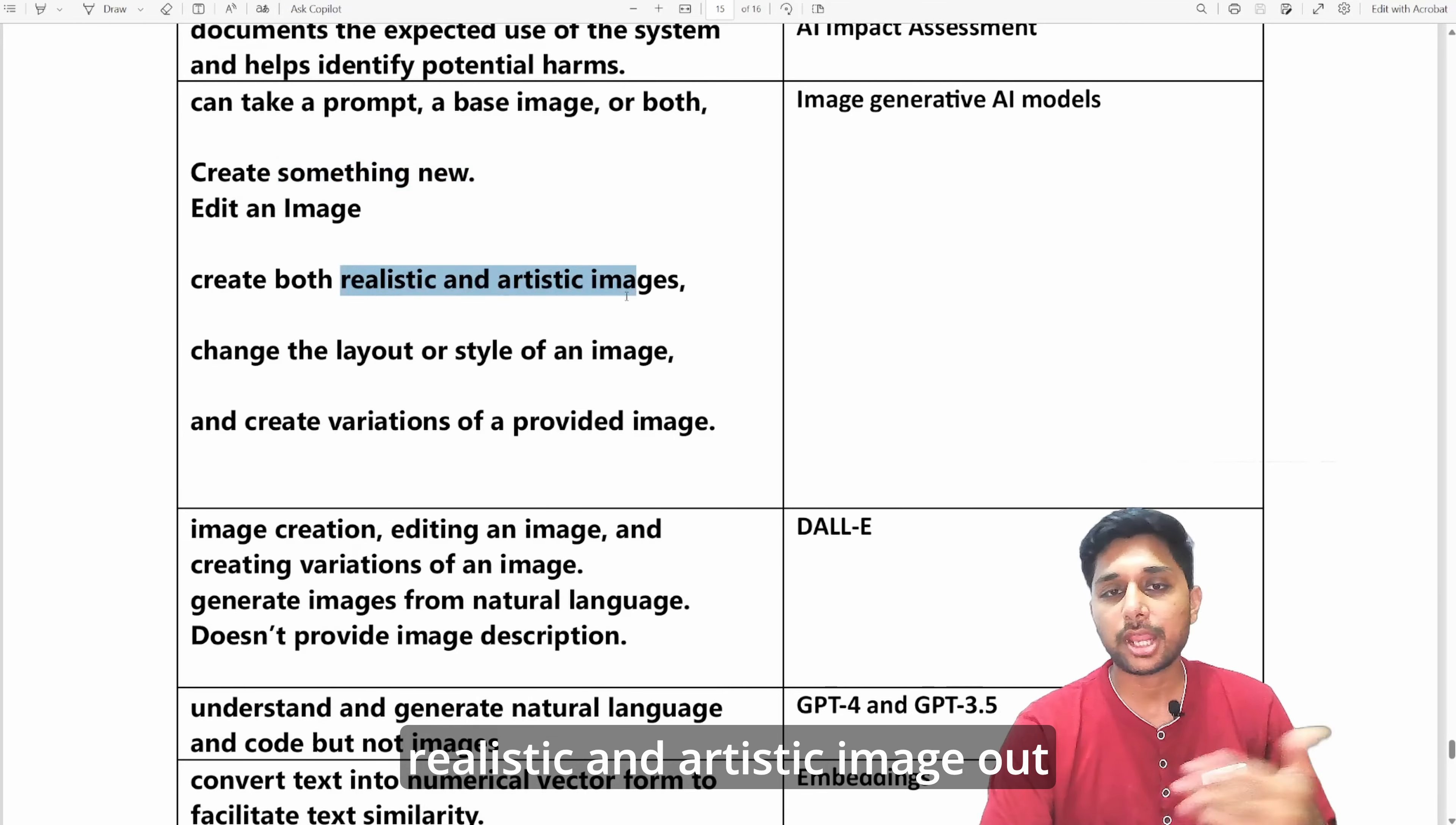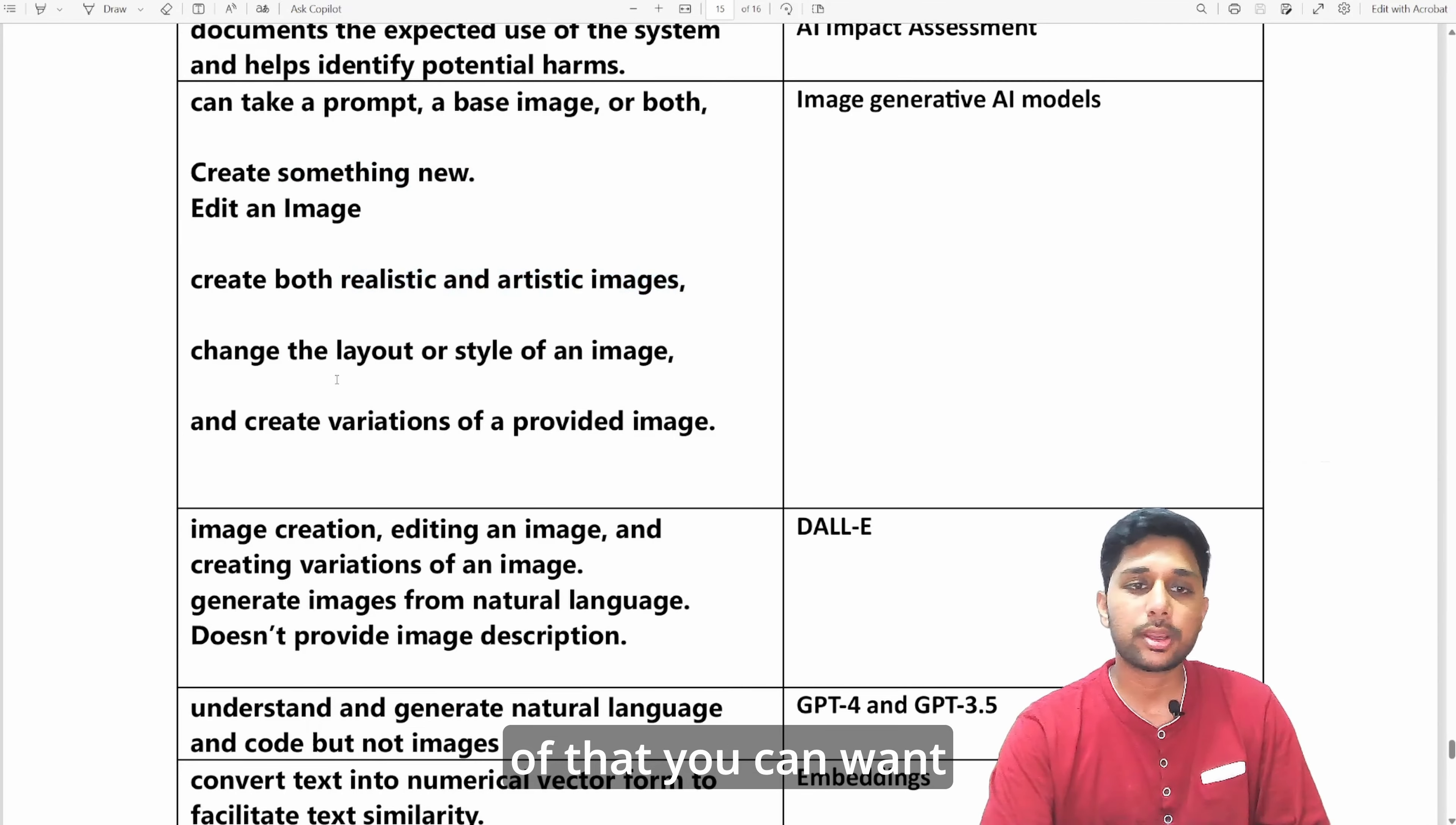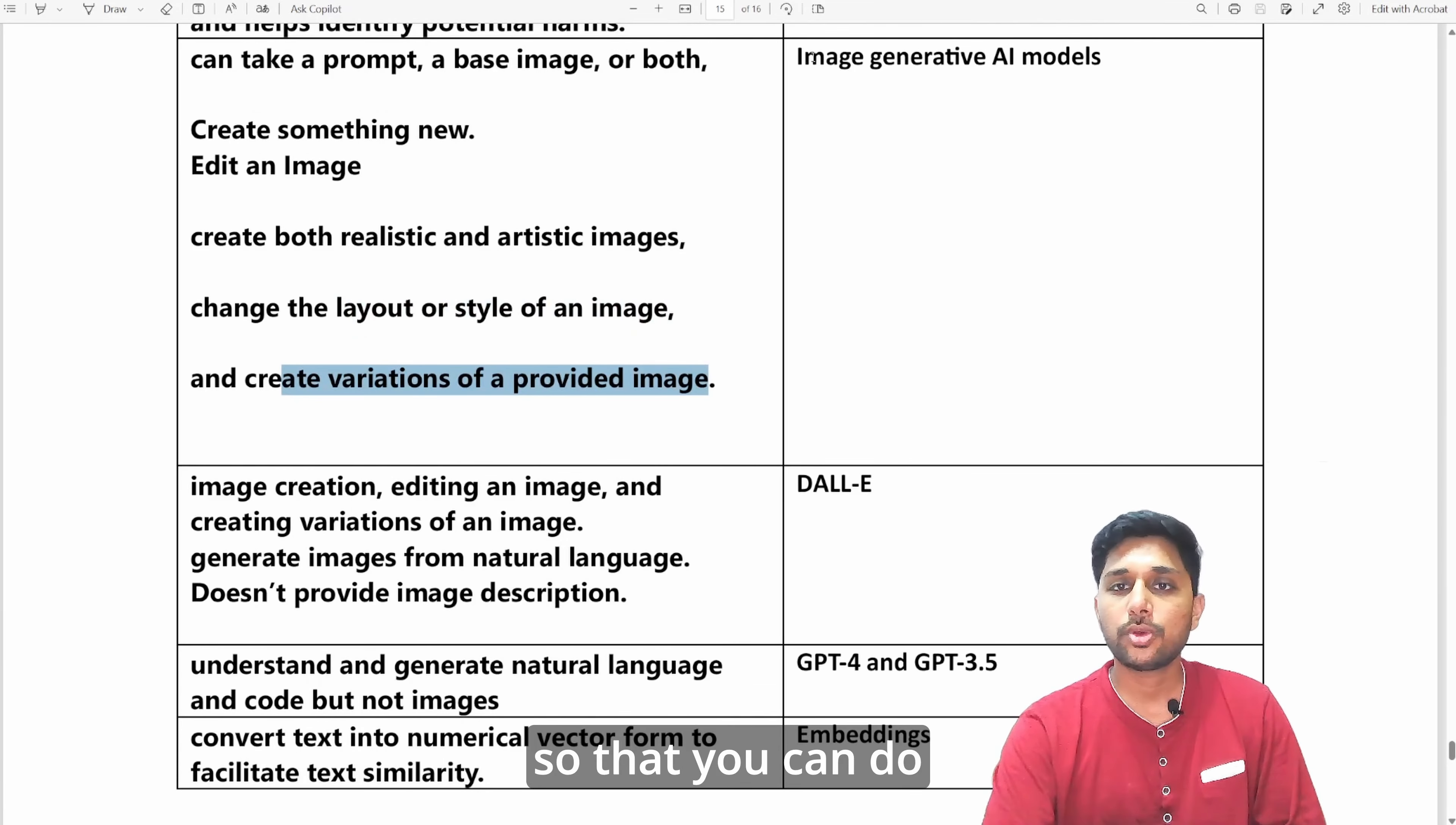You want to create both realistic and artistic images out of that, you can want to change the layout or style, you want to create another variation of that image. You can do that using image generative AI models.